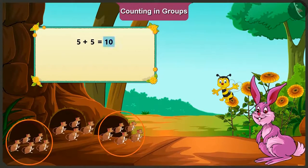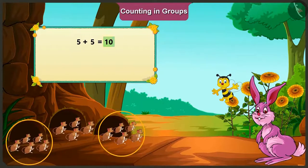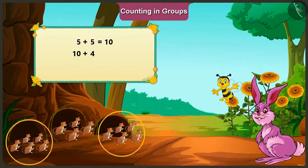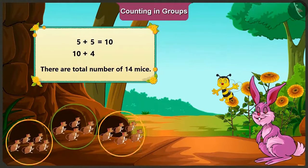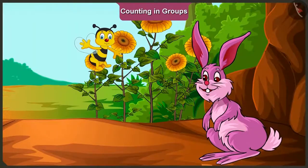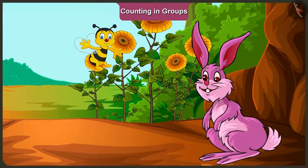In which, if we add the remaining four, that is, if we add four to ten, the total number of mice here will be fourteen. Well done, bunny. Bunny, you found out the number of mice with an easy method. Come on, now let us look at another example.